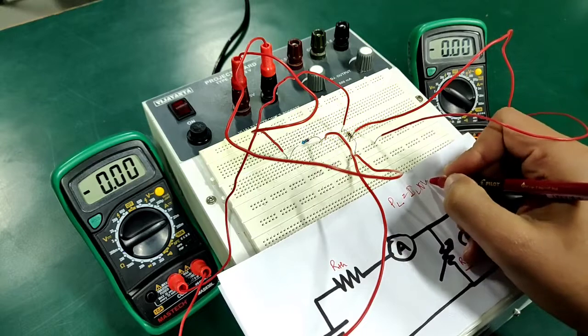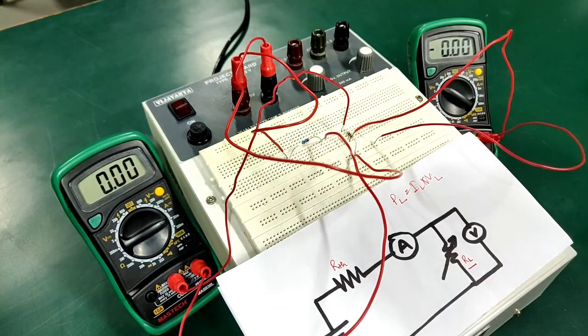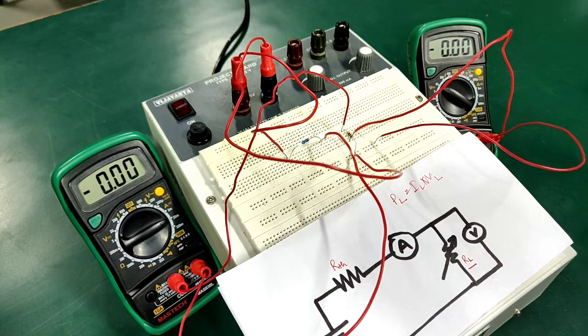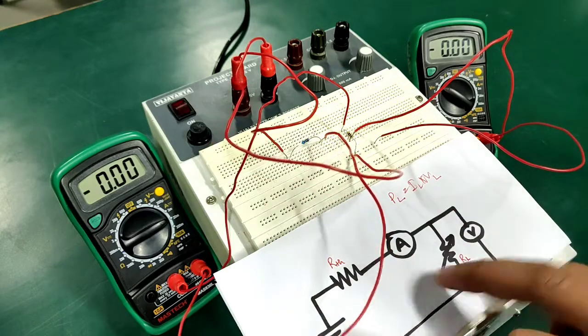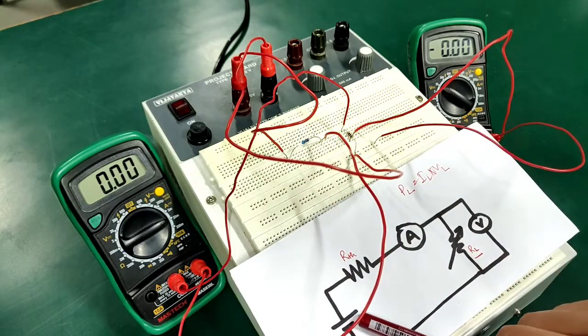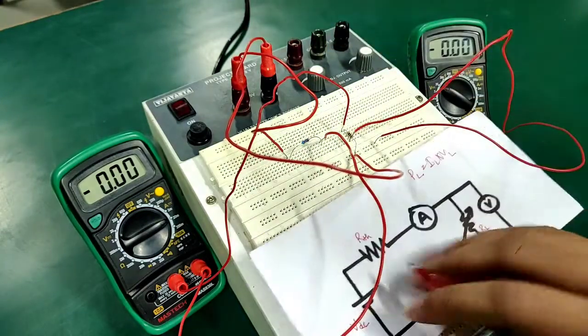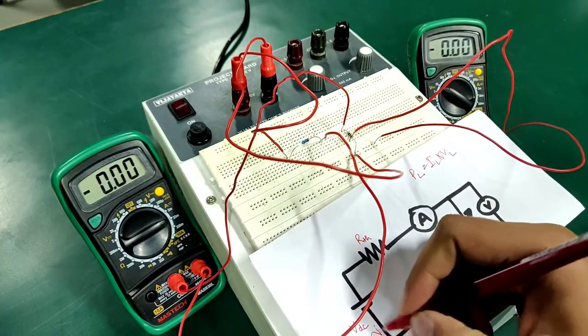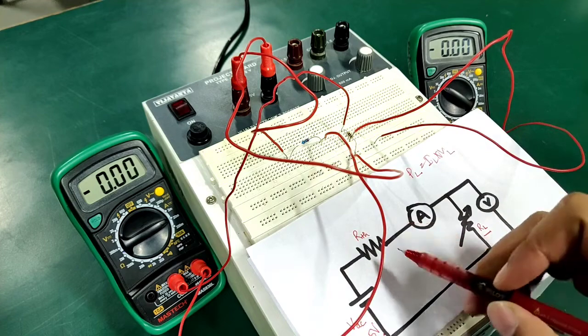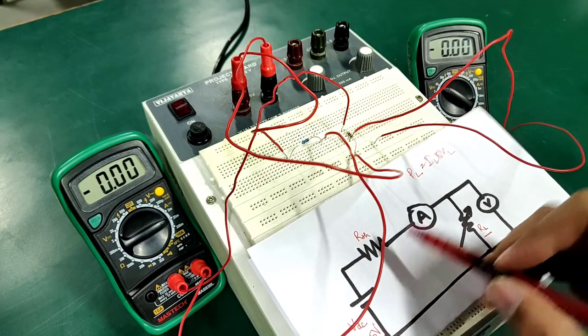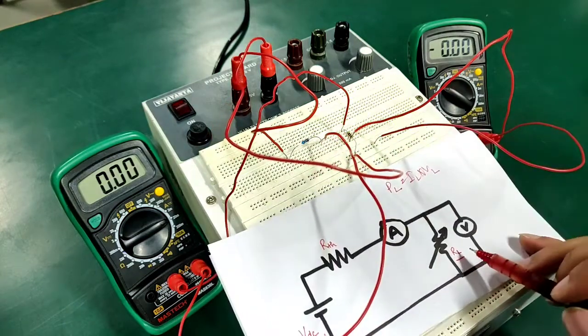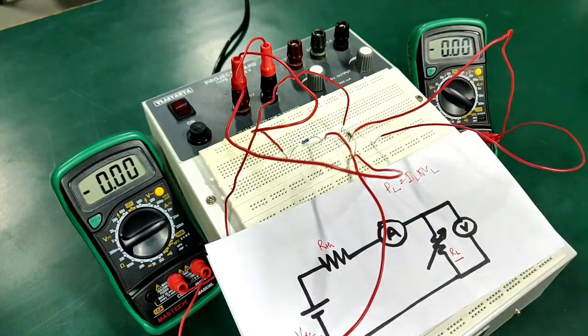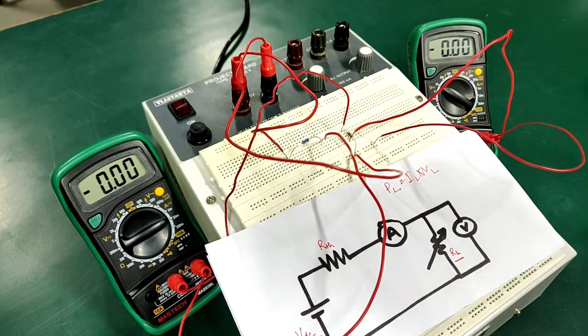So what I have done here for step one is I have drawn this same circuit onto my breadboard. You can clearly see here this is my voltage supply which I have kept at 5 volts. I have one resistance Rth which is here and I have another resistance RL which is here.